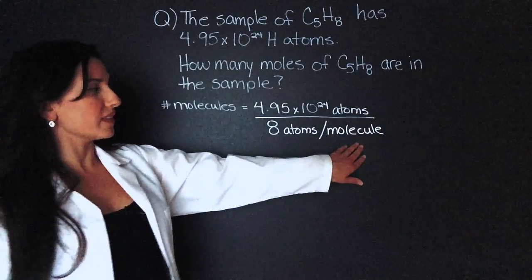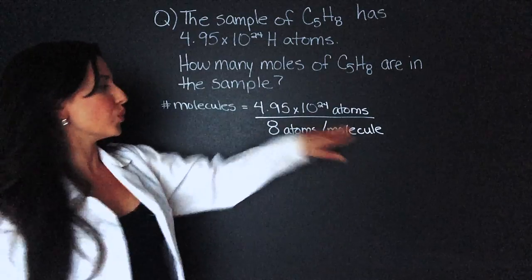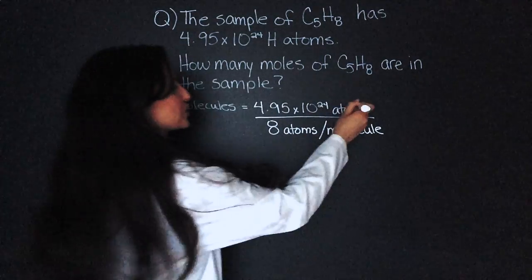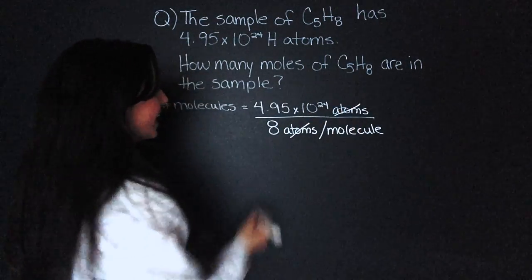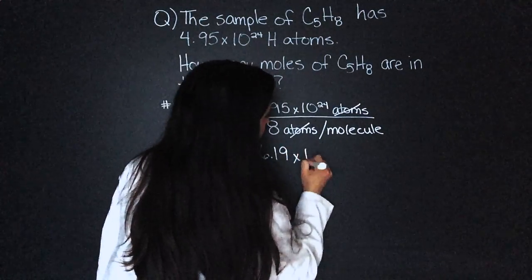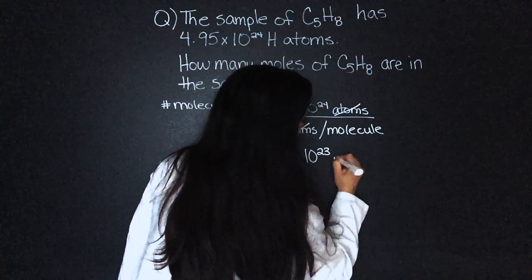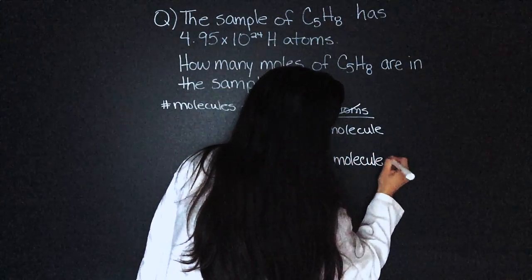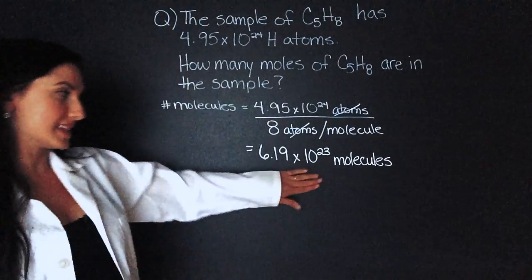And you can tell just by the units that molecule will end up our units. The atoms will cancel each other out. That leaves us with 6.19 times 10 to the 23 molecules in the sample.